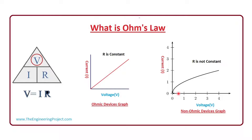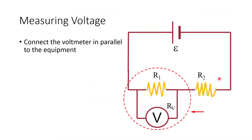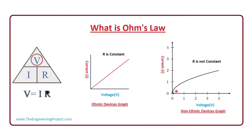So if you have a nonlinear relation like this, it means the device is not an Ohmic device. Going back to Ohm's law — in order to determine things in the Ohmic circuit, you need to know the voltage and the current.